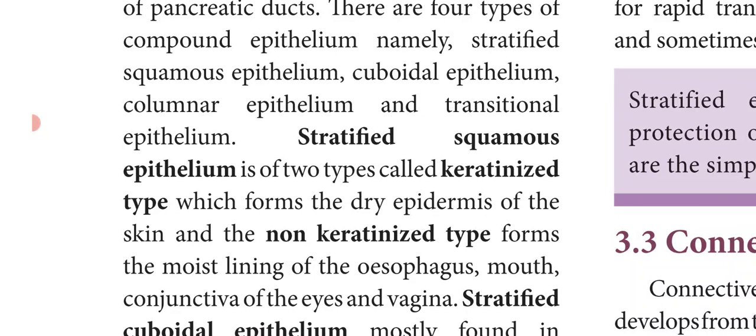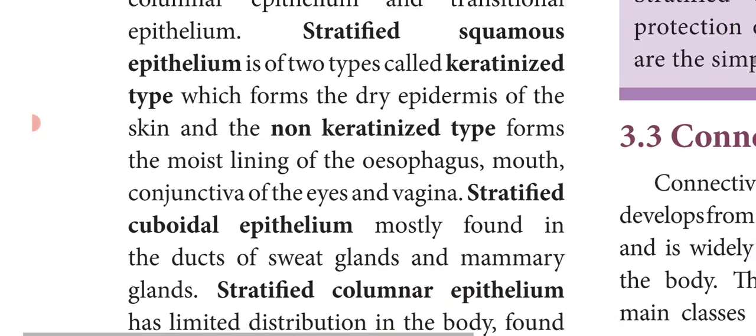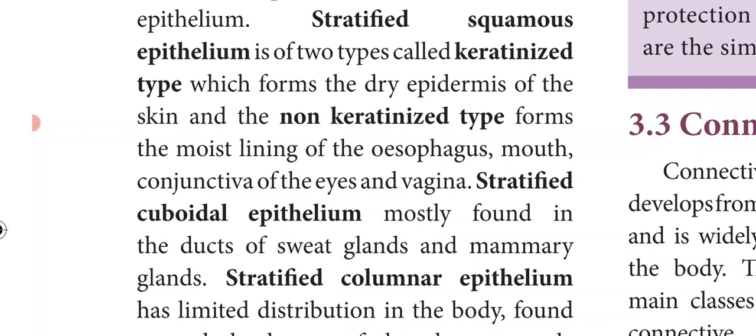The keratinized type forms the dry epidermis of the skin and the non-keratinized type forms the moist lining of the esophagus, mouth, conjunctiva of the eyes and vagina. Stratified cuboidal epithelium is mostly found in the ducts of the sweat glands and mammary glands.